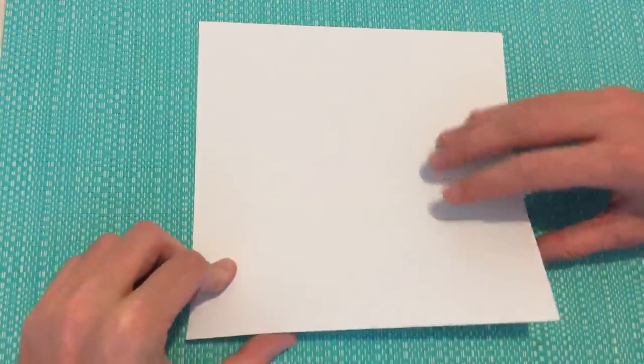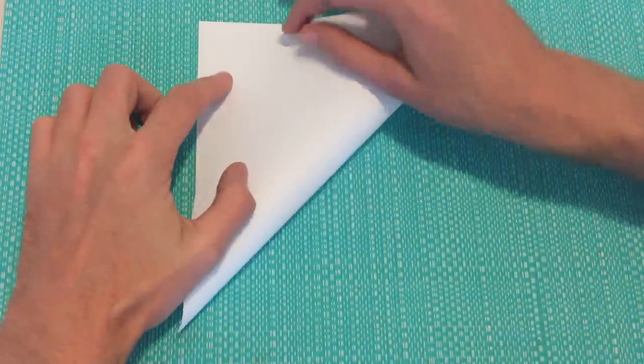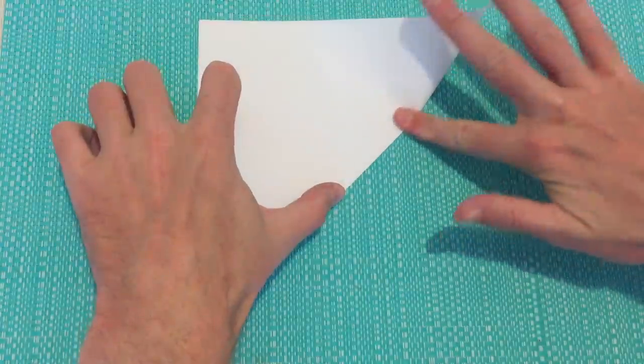With our square sheet of paper, we're going to fold from the bottom right up to the top left and create a crease.